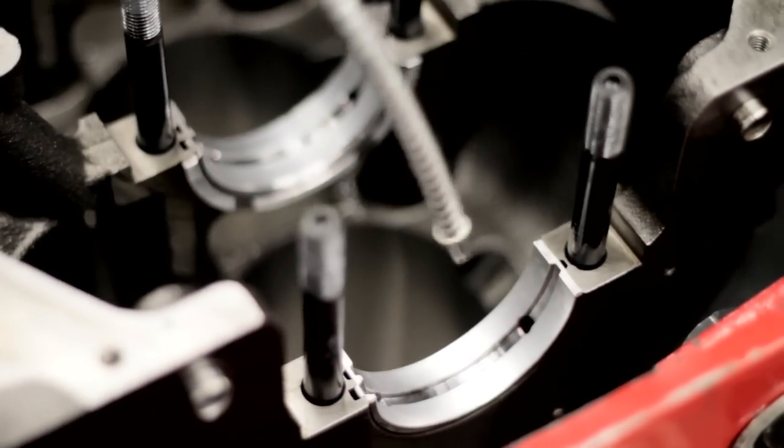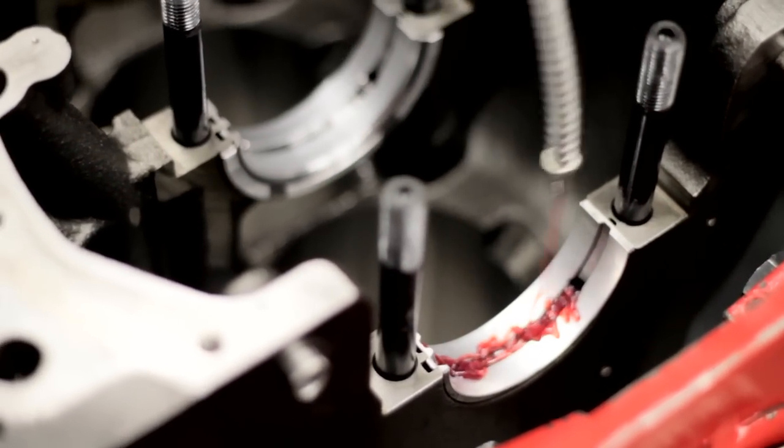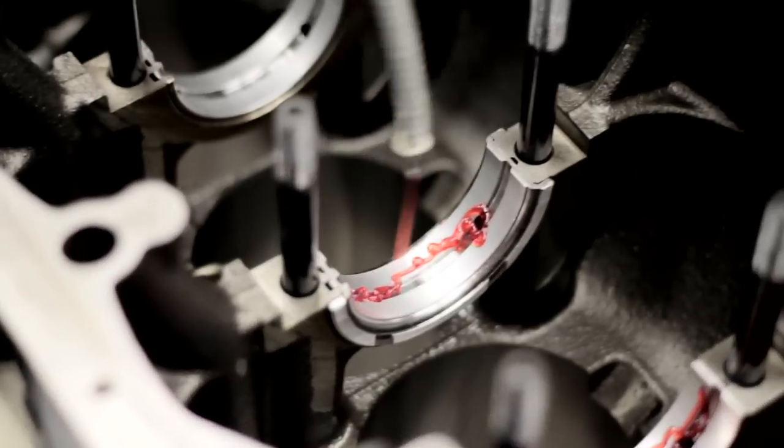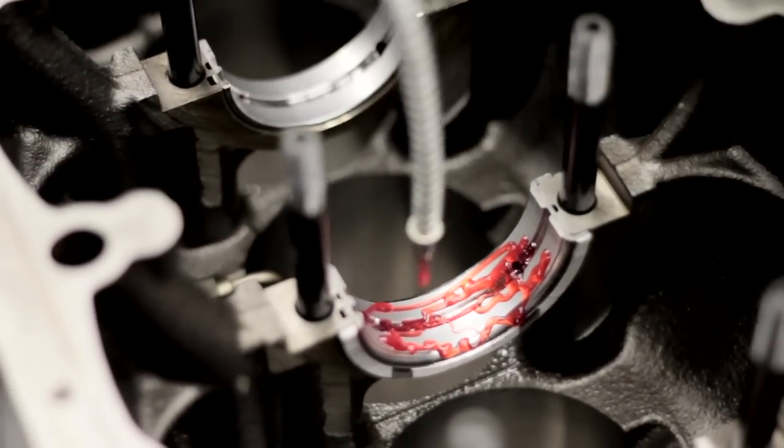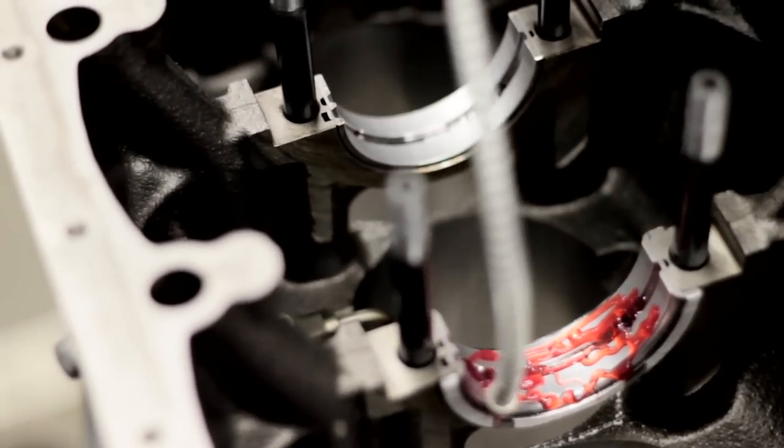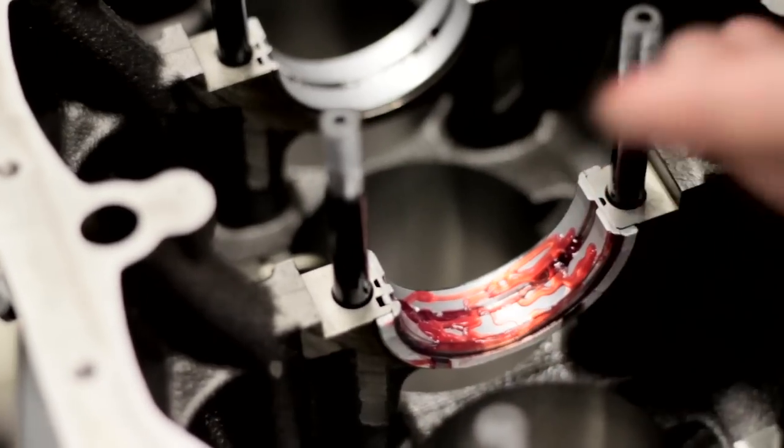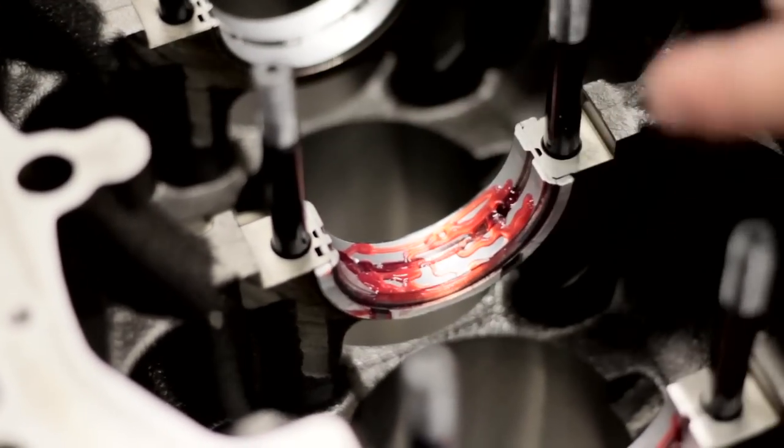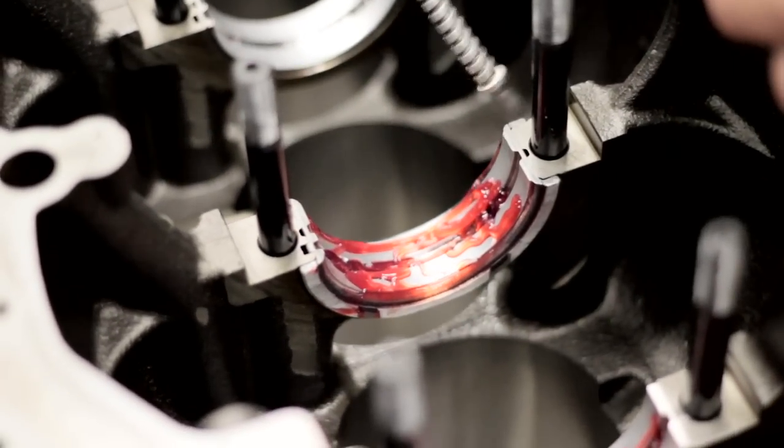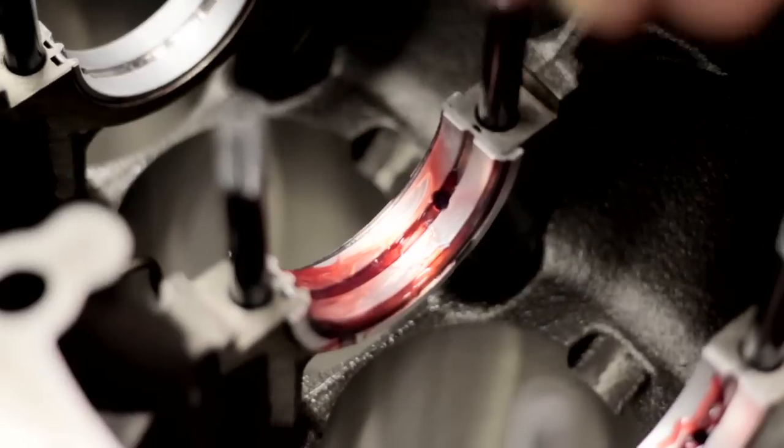So now I'm going to put some Clevite bearing guard on the main bearings. And what is that for? This is like a pre-startup lube. So this one here I'm doing now is the thrust, which when you step on the clutch, it's pushing the crank into this radius flange bearing. Oh, is that why it's the one around the edge? Yeah, that's why this number six looks different than the rest.